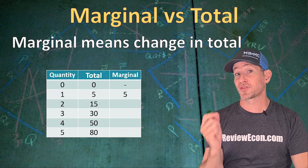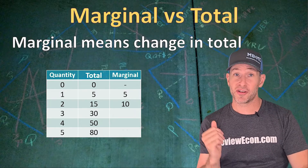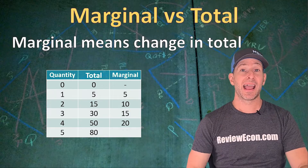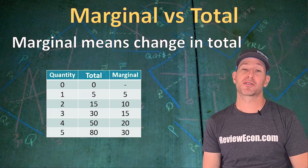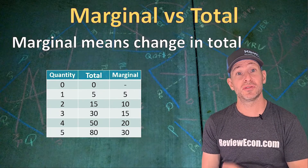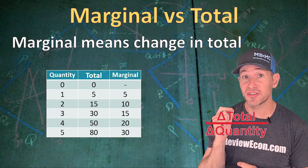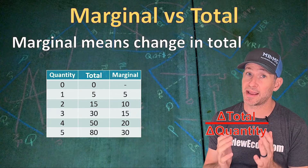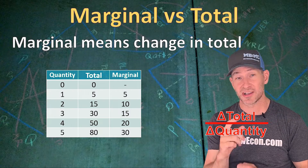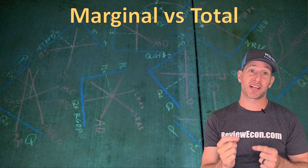The second unit, the total goes from 5 to 15 — that's a marginal amount of 10. From 2 to 3, we go from 15 to 30, a marginal amount of 15. From 3 to 4, we have a marginal amount of 20. And from 4 to 5, we have a marginal amount of 30. So that marginal column is the change in the total for each new unit of quantity. The formula for marginal is change in the total divided by change in the quantity. But on your AP microeconomics exam, change in quantity is almost always going to be 1, so you just need to look at the change in the total for that next unit. Remember, marginal is the change in the total.